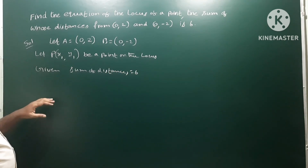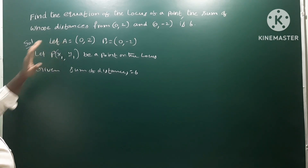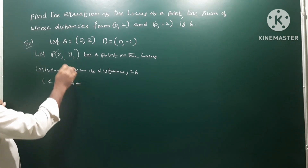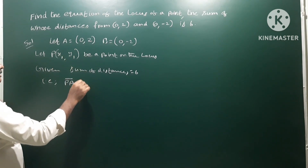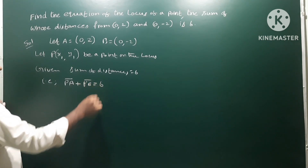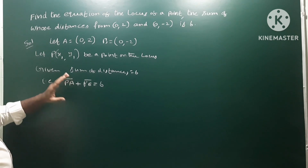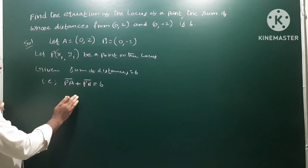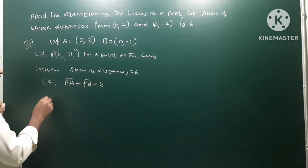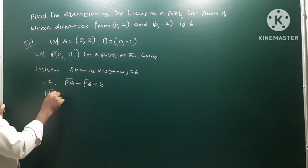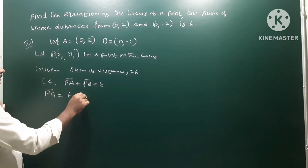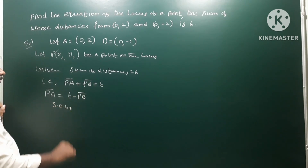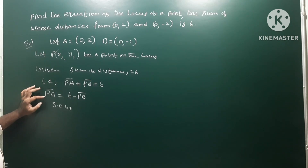Given: the sum of distances PA plus PB is equal to 6. So our condition is PA plus PB equals 6. Now we isolate: PA equals 6 minus PB. Squaring both sides, PA squared equals (6 minus PB) squared. We apply the distance formula under the root, so after squaring, PA becomes PA squared.